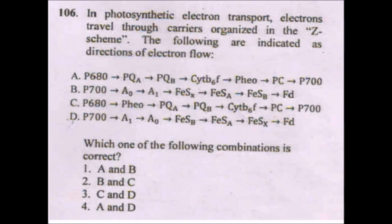Next question on photosynthetic electron transport in the Z-scheme: the answer is option 2. The correct electron flows are: B — flow from P700 to A0, A1, and directly to ferredoxin; and C — from P680 to pheophytin and then toward P700.